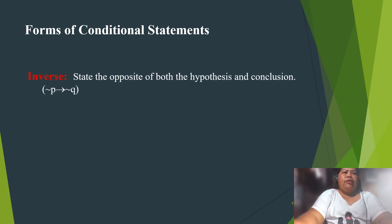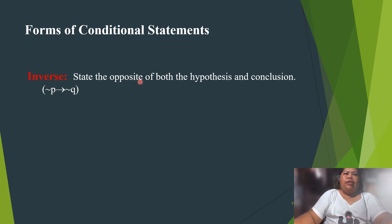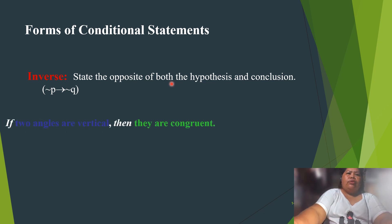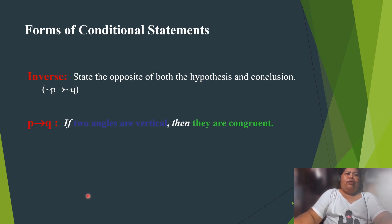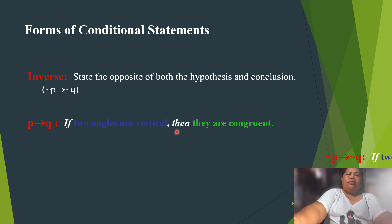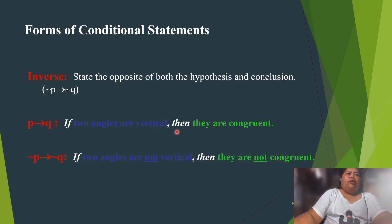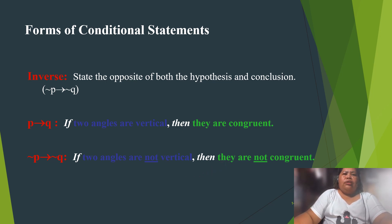The next form is the inverse. In the inverse, you state the opposite of both the hypothesis and the conclusion. Example: 'If two angles are vertical, then they are congruent' becomes 'If two angles are not vertical, then they are not congruent.'